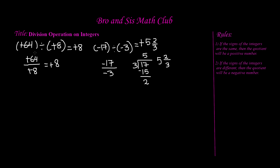Now let's do another problem. Let's say we have positive 42 divided by negative 7. In this case we have different signs, so if we read rule number 2, it says if the signs of the integers are different — which here we have a positive number and a negative number — then the quotient will be a negative number.